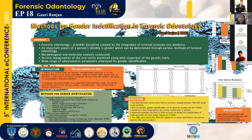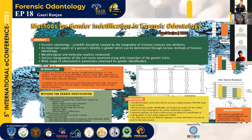The next essential subcategory under visual methods is canine dimorphism, which includes analysis of dimensions of canine teeth by various methods such as Fourier analysis, Morier topography, and studies conducted by Anderson and Thompson. All these studies conclude that the mandibular canine showed a greater degree of sexual dimorphism.